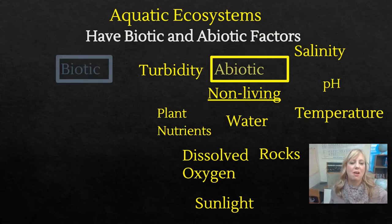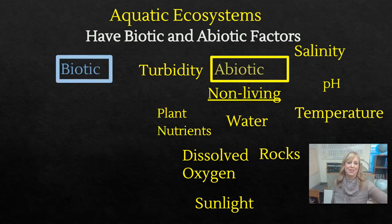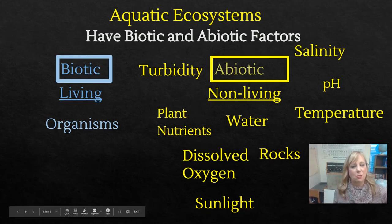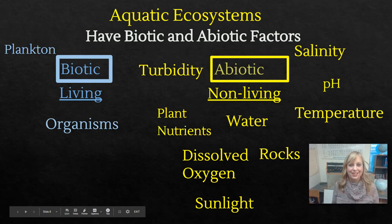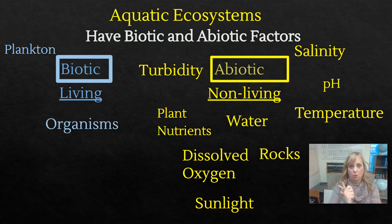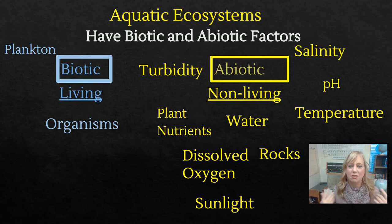Now we're going to look at biotic factors. Biotic is fancy for living — we use the word living or organisms with that. There's a ton of living organisms inside the water. One of the things we look at is plankton. Plankton have unique roles in ecosystems: one type is a producer that makes food for everything else, and there's also another type of plankton that are consumers. Plankton is just fancy for things that float around.